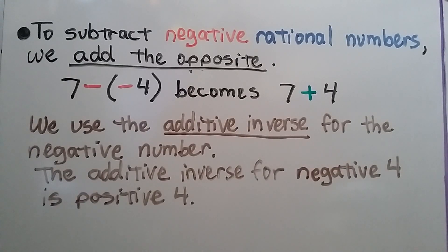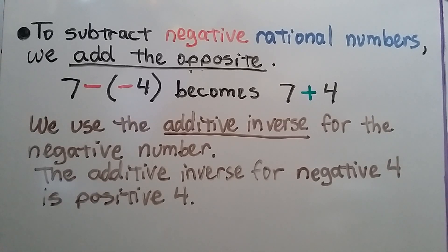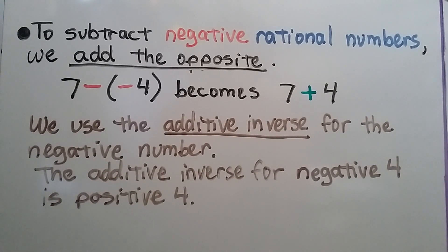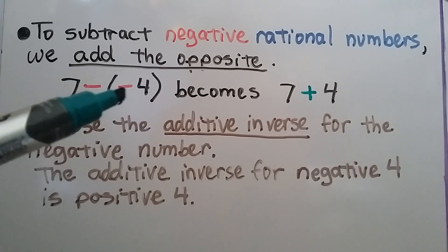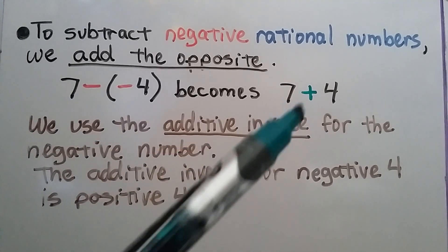To subtract negative rational numbers, we add the opposite. So 7 minus a negative 4 becomes 7 plus 4. We use the additive inverse for the negative number. The additive inverse for negative 4 is positive 4 — it's its opposite across 0 on a number line. So we turn this subtraction sign and this negative sign into a plus.